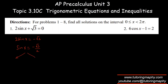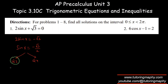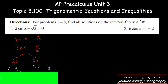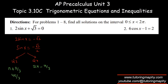Since sine is negative, it's in quadrant 3 and quadrant 4. Find the reference angle by ignoring the negative: sin(x) = √3/2 gives a reference angle of π/3 from the unit circle. Swinging π/3 to quadrant 3 gives π + π/3 = 4π/3, and in quadrant 4 it's 2π − π/3 = 5π/3. Those are the two answers.